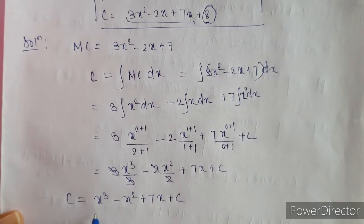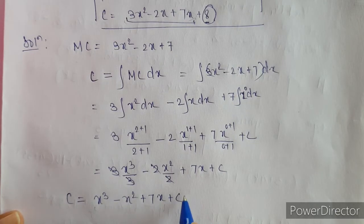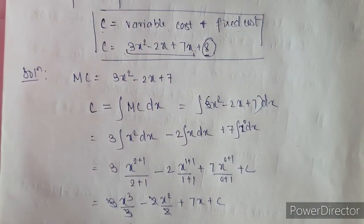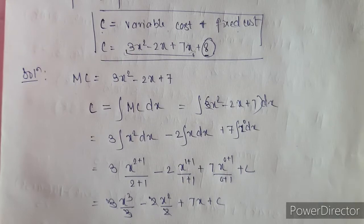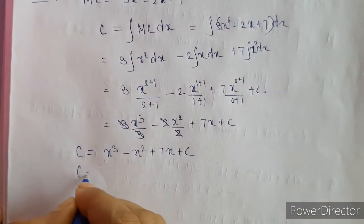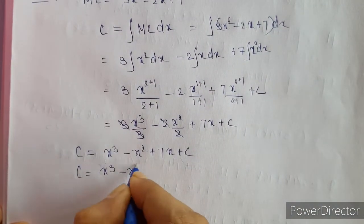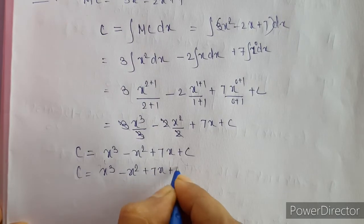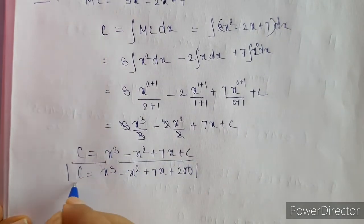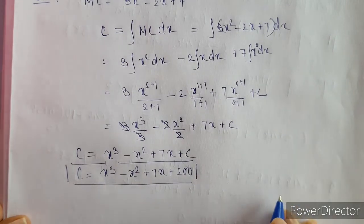These three terms are the variable cost and C is the fixed cost. The fixed cost is given as 200. So we can write the cost function as X cubed minus X squared plus 7X plus 200. This is our required cost function.